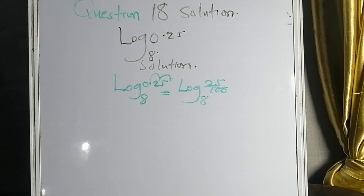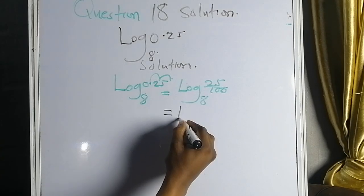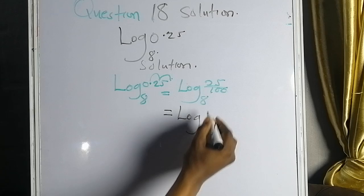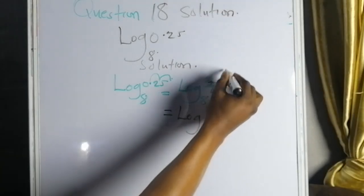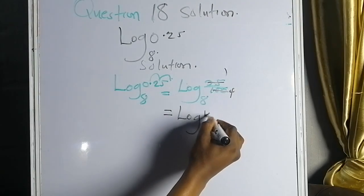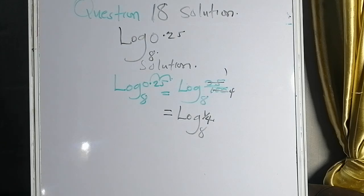It's straightforward. I will now write log — 25 can go into 100 four times, so this is the same thing as 1 over 4, base 8.